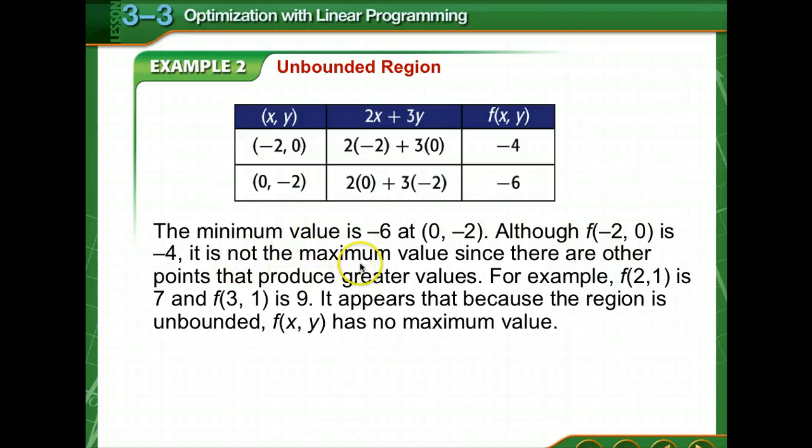So what they're saying is you'll have only a minimum or a maximum, not both, and that you cannot assume there is no maximum if the feasible region is unbounded above the vertices. You have to test points to determine if there is a minimum or a maximum.